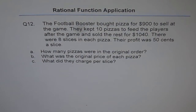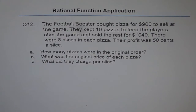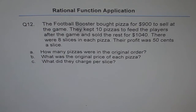Rational Function Application Question 12. A football booster bought pizza for $900 to sell at the game. They kept 8 pizzas to feed the players after the game and sold the rest for $1040. There were 8 slices in each pizza and their profit was 50 cents a slice. How many pizzas were in the original order? What was the original price of each pizza?